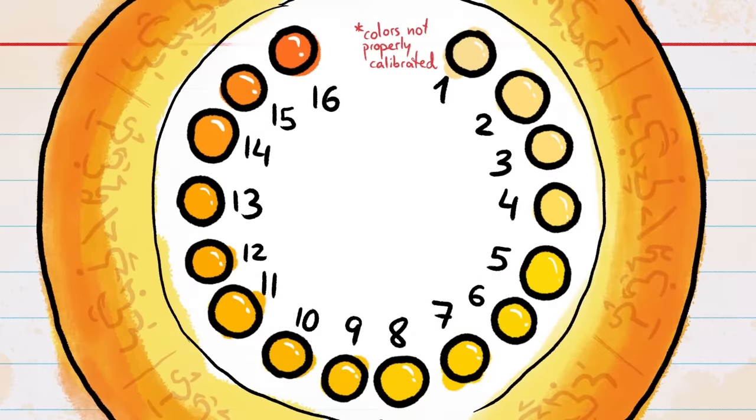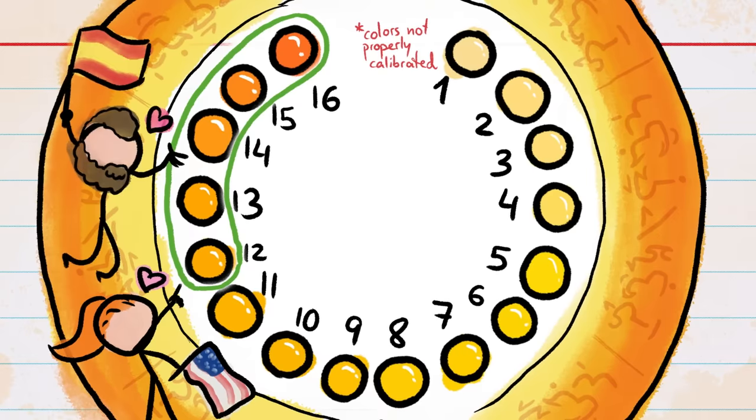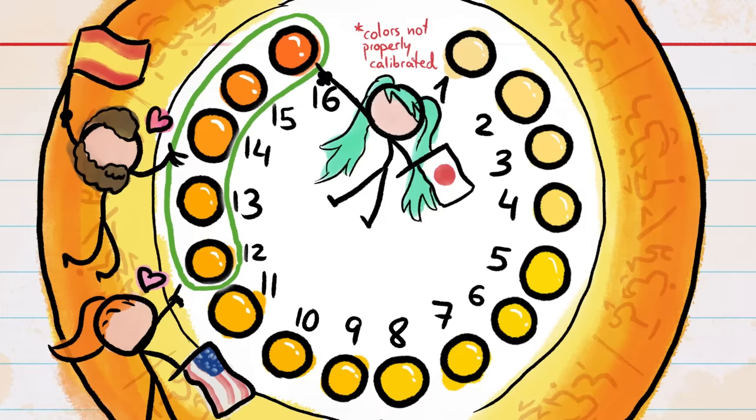There's actually a color guide for this exact purpose. Research has found that people generally prefer yolks of shade 12 or higher, although there's some interesting variation in which shade people around the world prefer. Southern Europe likes a 14. And there's a trend in Japan toward the egg-stravagantly dark 16.